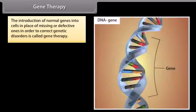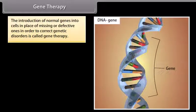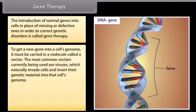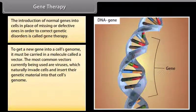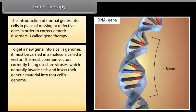Gene therapy. The introduction of normal genes into cells in place of missing or defective ones in order to correct genetic disorders is called gene therapy. To get a new gene into a cell's genome, it must be carried in a molecule called a vector. The most common vectors currently being used are viruses, which naturally invade cells and insert their genetic material into that cell's genome.